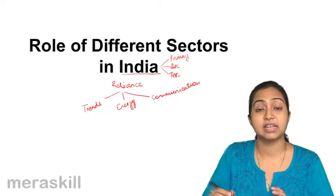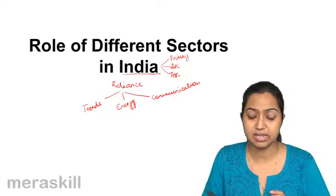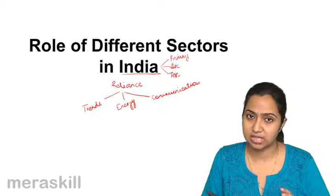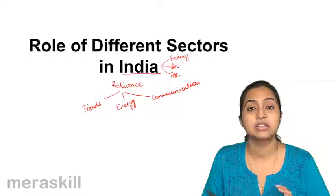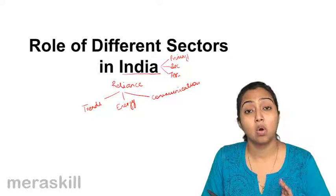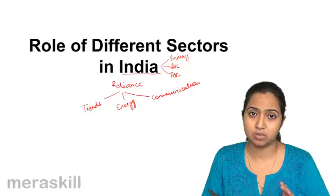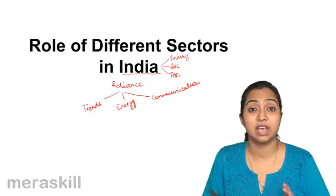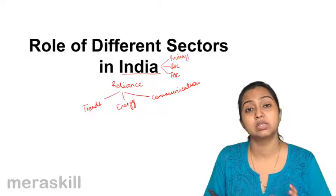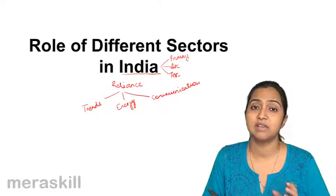The primary sector is the one associated with agriculture and allied industries. The secondary sector is associated with industry, and the tertiary sector is the one which provides services. All three sectors are very important for the economy as they are big employment providers, they earn income, and they constitute heavily in the GDP.